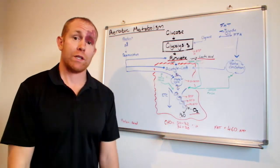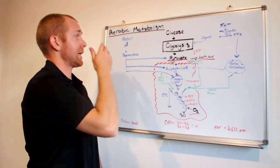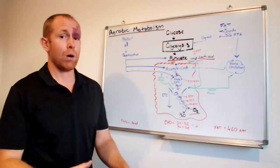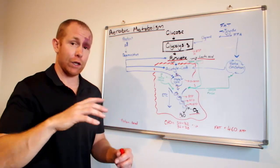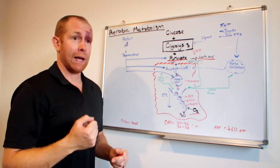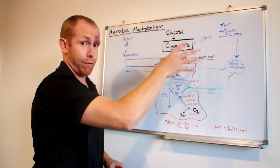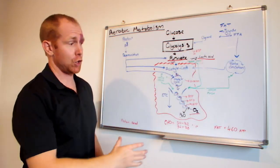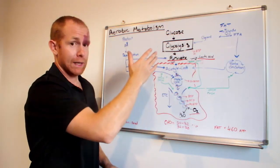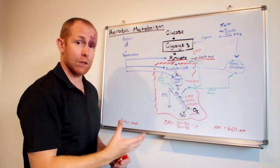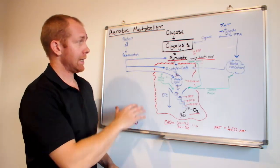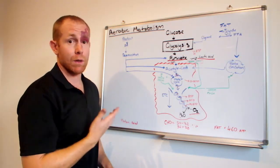The other macronutrients that we also use for some energy is protein. Protein does not have a huge capacity for energy. Glucose and fat are preferred over protein. However, during times of carbohydrate or muscle glycogen depletion, protein is used more.